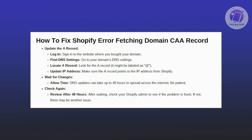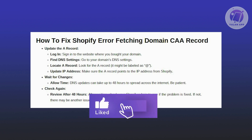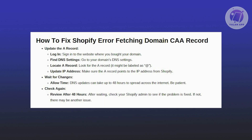Now look for something labeled as A record, or an at sign, or something similar. This is the record that directs your domain to the correct IP address. Check that this A record points to the IP address provided by Shopify. You can find this IP address in your Shopify admin page under your domain settings, or it might be mentioned in an error message you receive.